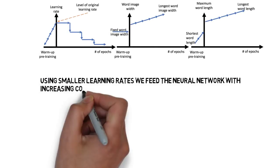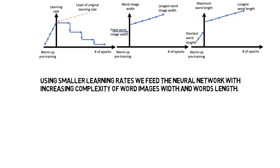Using smaller learning rates, we feed the neural network with increasing complexity of word images' widths and word lengths.